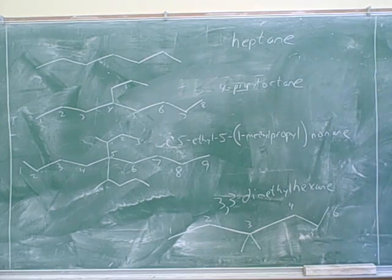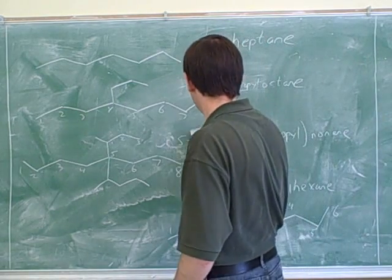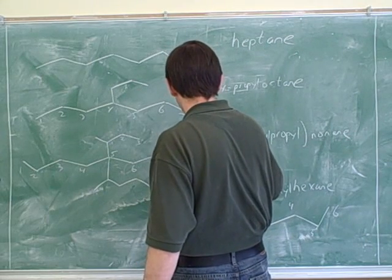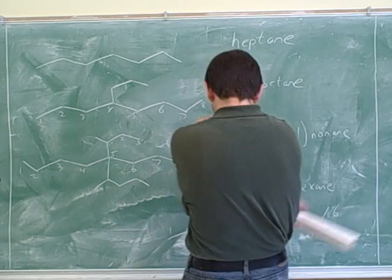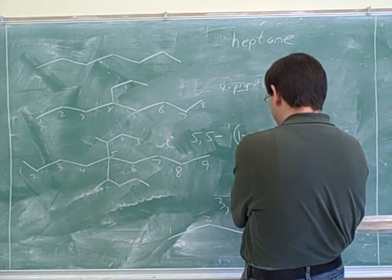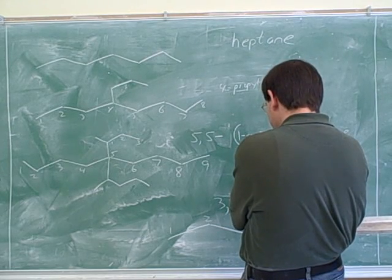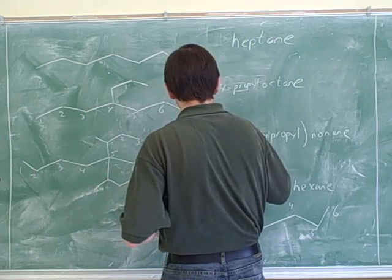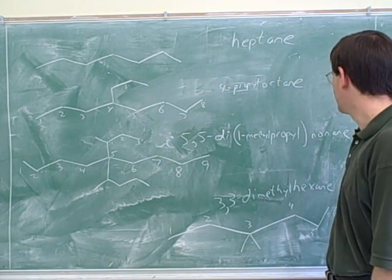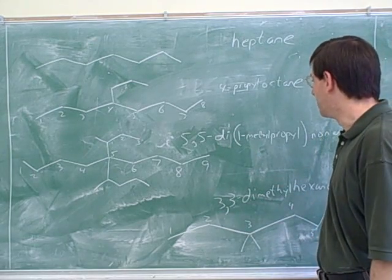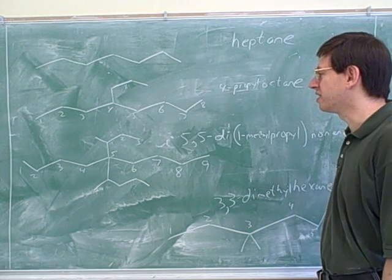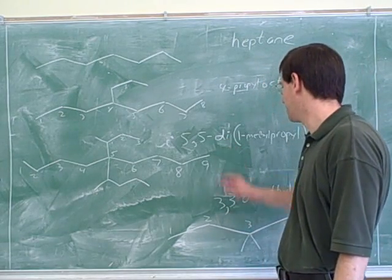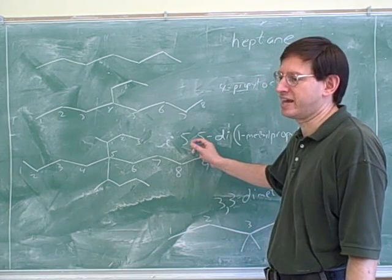Let's go back and try to give a name to this again. There wouldn't be the ethyl now, so it would just be 5,5-(1-dimethylpropyl). This is so complicated, I'm not even quite sure myself. This is probably a little harder than you'd expect to see. You're not that likely to see a compound with two branch substituents of the same type, but it can't hurt to know how to do it. The main thing you were leaving out before was the two separate fives, and that's something you could definitely see on the test.